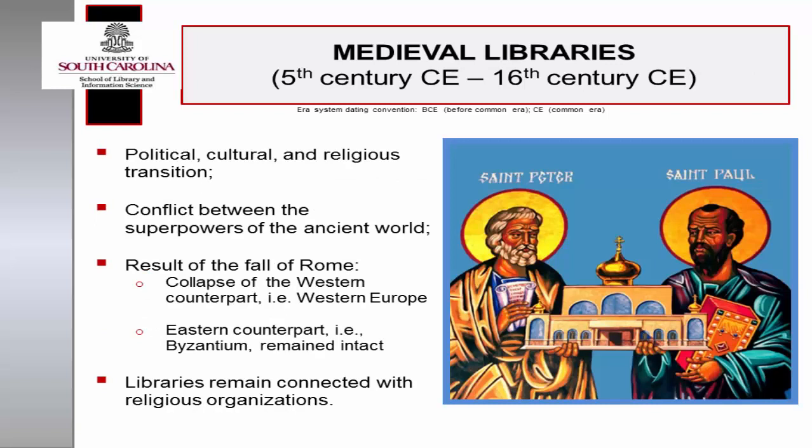As you will recall, libraries thrive under three conditions, one of which is political stability. During the medieval period, major civilizations faced political, linguistic, and religious upheavals, culminating in an ideological rift between East and West. The medieval period was marked by successive power shifts between the superpowers of the ancient world, Persia and Rome, compounded by invasion and conquest by the steppe empire of Central Asia. Scholars of European history referred to events between the 5th and 15th century CE as the Dark or Middle Ages, mapping the era from the fracturing of the Roman Empire to the emergence of the Italian Renaissance movement.